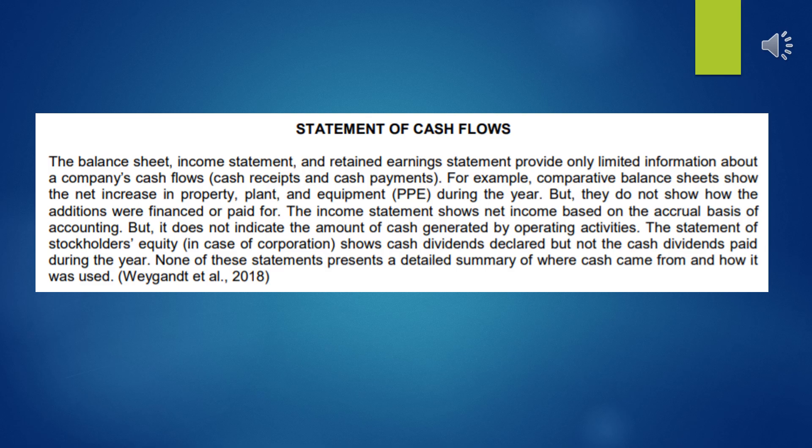In the income statement, it shows net income based on the accrual basis of accounting, but it does not indicate the amount of cash generated by operating activities. Also, the statement of stockholders' equity, in case of a corporation, shows only cash dividends declared, but not the cash dividends paid during the year.